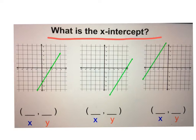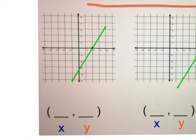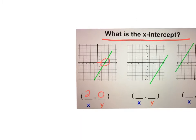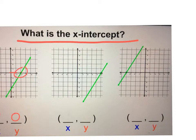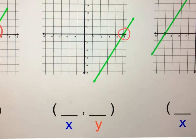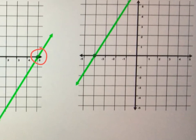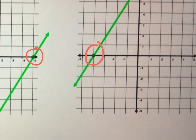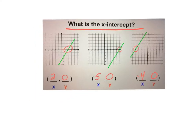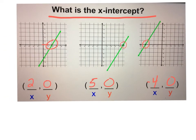For these three graphs we're going to locate the x-intercept and give the coordinates. The first graph has an x-intercept of 2, so the coordinates are (2, 0). The middle graph's x-intercept is 5, giving coordinates (5, 0). The third graph has an x-intercept of negative 4, so the coordinates are (−4, 0). Notice all x-intercepts have a y-coordinate of 0 — that's really important.